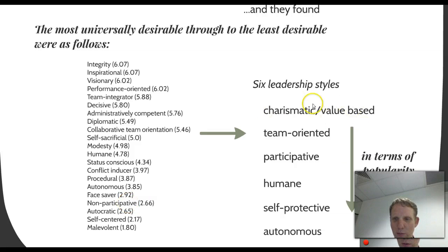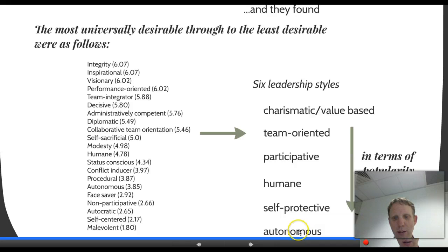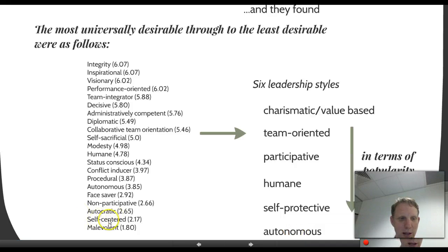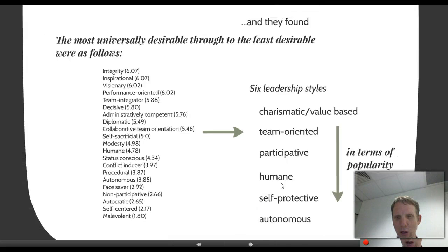The most popular leadership style across all nations was charismatic — which includes being visionary and inspirational, as well as decisive. At the bottom was autonomous — self-centred and non-participative. Notably, being humane or nice as a boss wasn't right at the top.